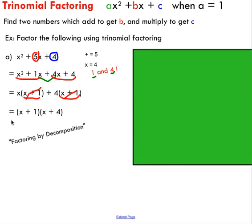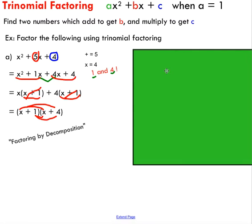So that's our factored trinomial — we ended up with two binomials being multiplied: (x plus one)(x plus four). We can check our answer using the FOIL method of expanding binomials — there's also a video lesson on that. If you FOIL those two binomials you'll get back your original trinomial, so you can always check your answer.